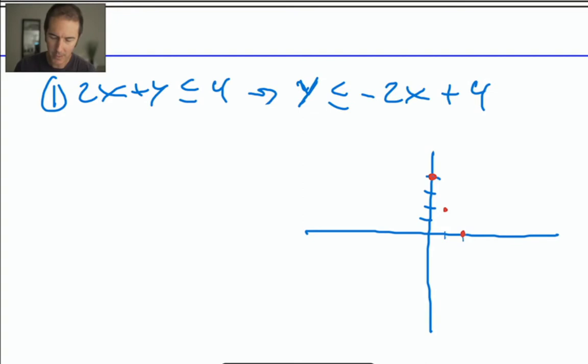If it had been a strict inequality, in fact, if it had been a strict inequality, I was thinking about changing it. But the next one that we do, we'll do with a strict inequality. But if it had been a strict inequality, we would draw our line as a dashed line. But for the moment, it's still or equal to. And let's draw our line.